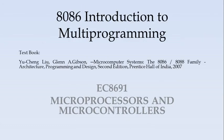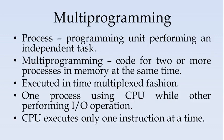Hello everyone. In this video we will see 8086 and the introduction to multiprogramming. Before getting into multiprogramming, we will see what is a process. A program under execution is called a process. It is a programming unit performing an independent task. When we say multiprogramming, we will have two or more processes in memory, meaning two or more programs will be executing at the same time in memory.